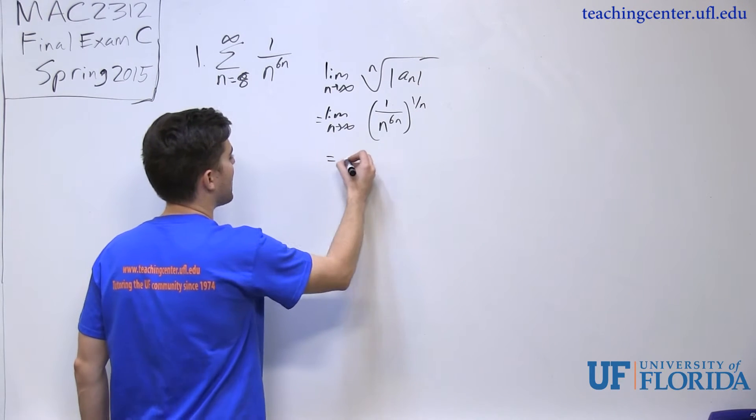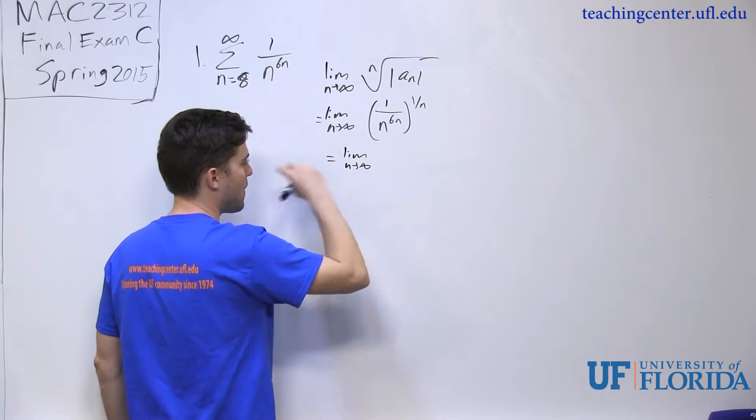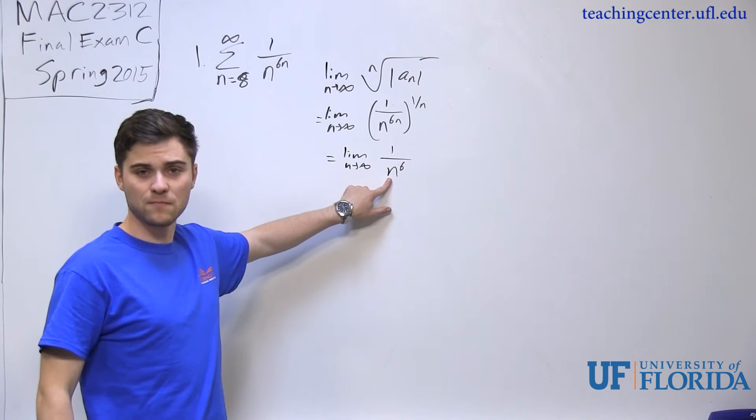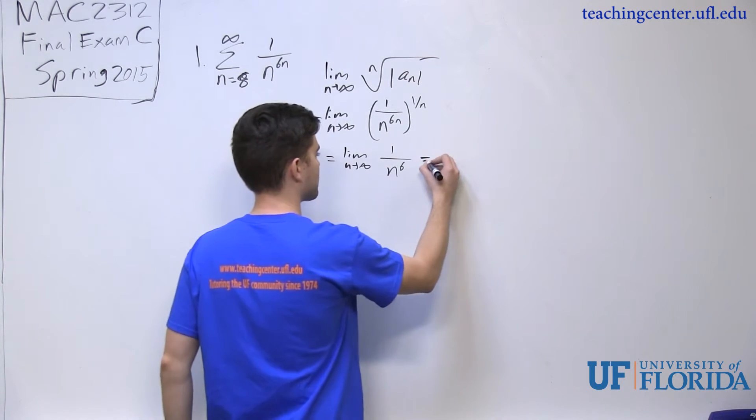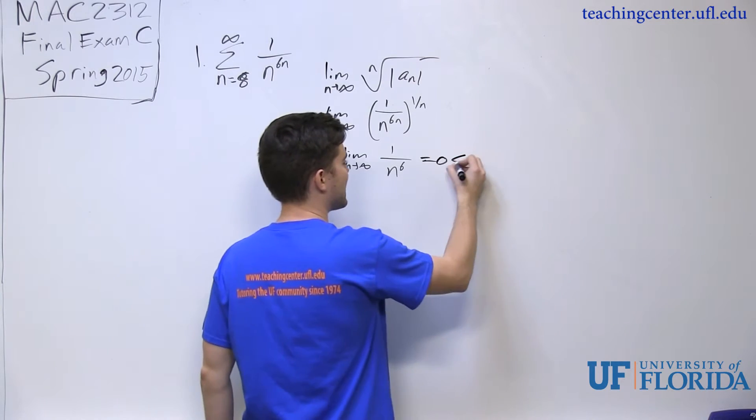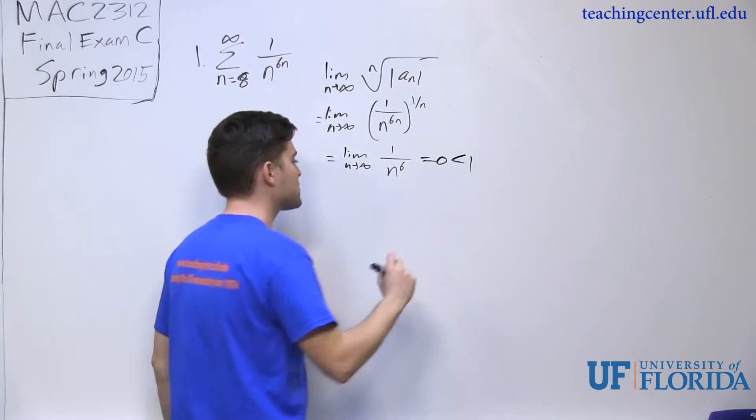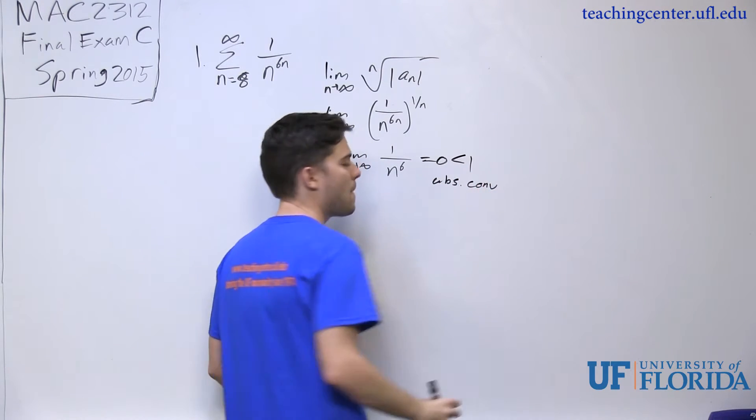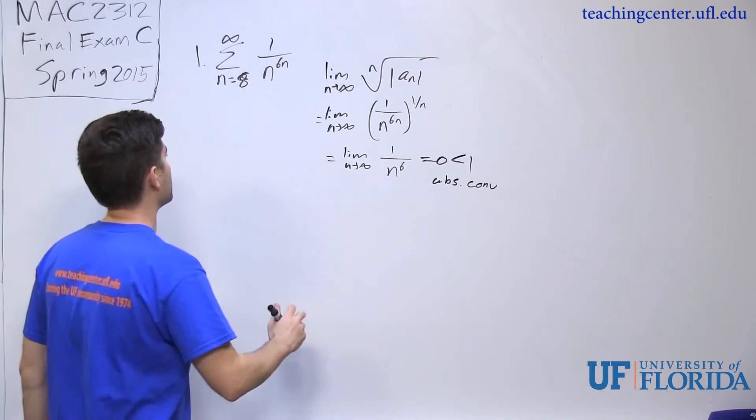So when I go ahead and apply that, I end up getting the limit as n approaches infinity of 1 over n to the 6th. And if I take the limit of this as n approaches infinity, I end up getting 0. 0 is less than 1, so therefore this series is absolutely convergent by root test. So for number 1, we have convergent.